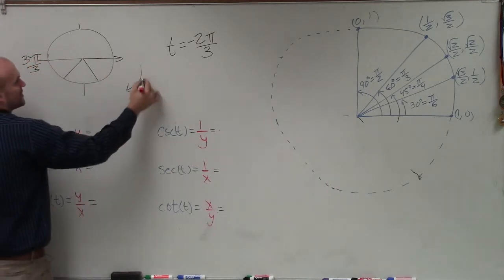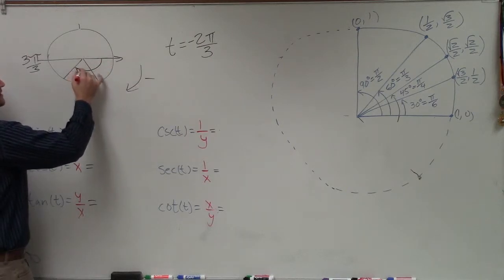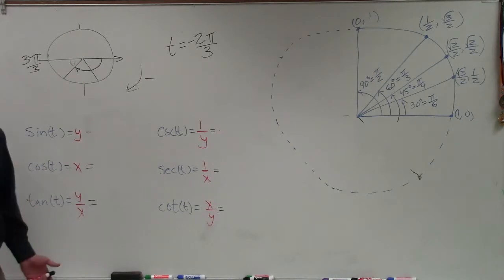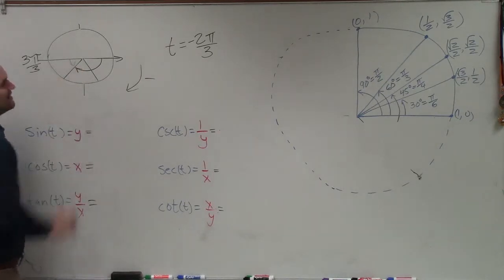And remember, we're just going in the negative direction. So if I have negative 2π over 3, that's going to be this distance right here. That means I'm just a second π over 3 off. So I'm just π over 3 off the x-axis.